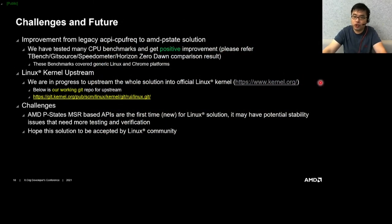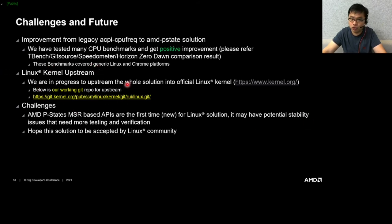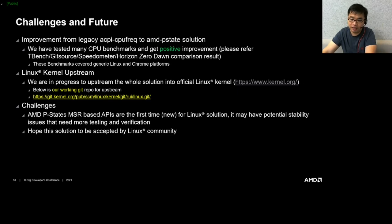According to the test results across each benchmark, we got very positive improvements with the new AMD P-state driver. We are in progress to upstream the whole solution into the official Linux kernel. You can refer to the repository below to get the latest source code of the AMD P-state driver. Since the AMD P-state MSR-based APIs are the first of their kind for a Linux solution, we might face some potential stability issues and need to do more testing and verification. We hope this solution can be accepted by the Linux community.